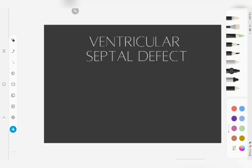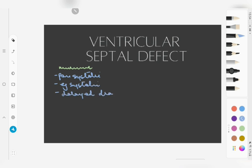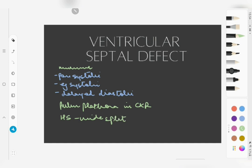To summarize our findings: ventricular septal defects present with three murmurs — the pansystolic, ejection systolic, and delayed diastolic murmur. These are not clinically distinguishable from one another. We also noted that pulmonary plethora can be seen on chest X-ray, the second heart sound is wide split, and left atrial enlargement may be seen in select cases.